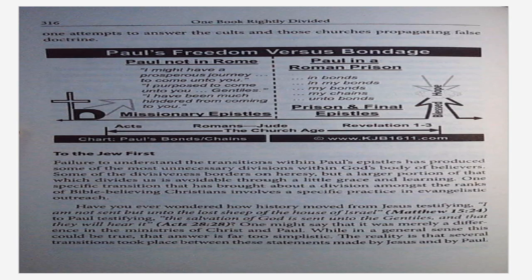During the ministry of Christ, the Lord plainly declared to his Jewish disciples that he was sent to the lost sheep of the house of Israel — Matthew 15:24. When sending out his Jewish disciples, Christ told them to go rather to the lost sheep of the house of Israel — Matthew 10:6. However, toward the end of Christ's earthly ministry, he broadened the scope of the outreach: Go ye therefore and teach all nations — Matthew 28:19 — followed by, ye shall be witnesses unto me both in Jerusalem and in all Judea and Samaria and to the uttermost part of the earth — Acts 1:8. Be sure not to miss how the directives evolved even during Christ's earthly ministry prior to Paul's conversion or writings.